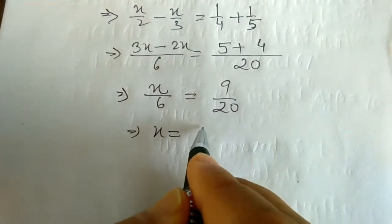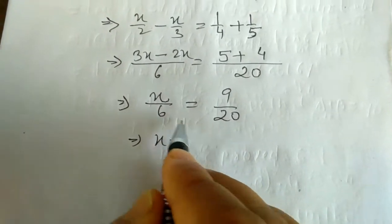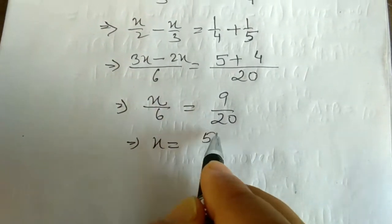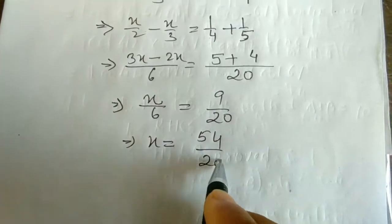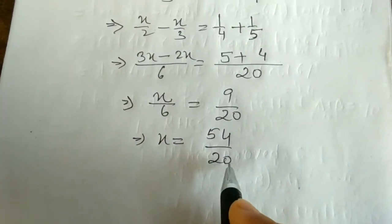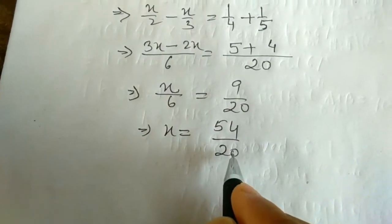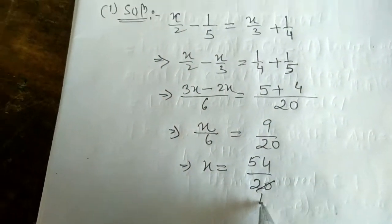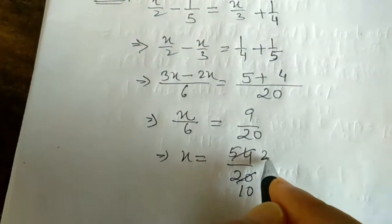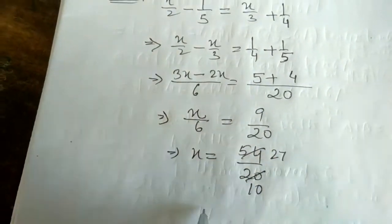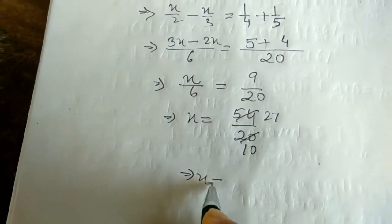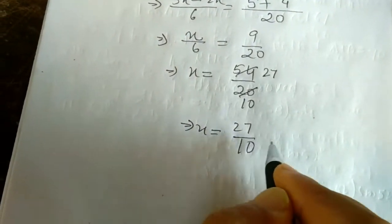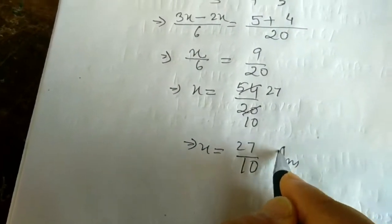Then x equals 6 times 9 over 20, which is 54/20. Cancelling by 2 gives 27/10. So x = 27/10. This is the answer for question number 1.